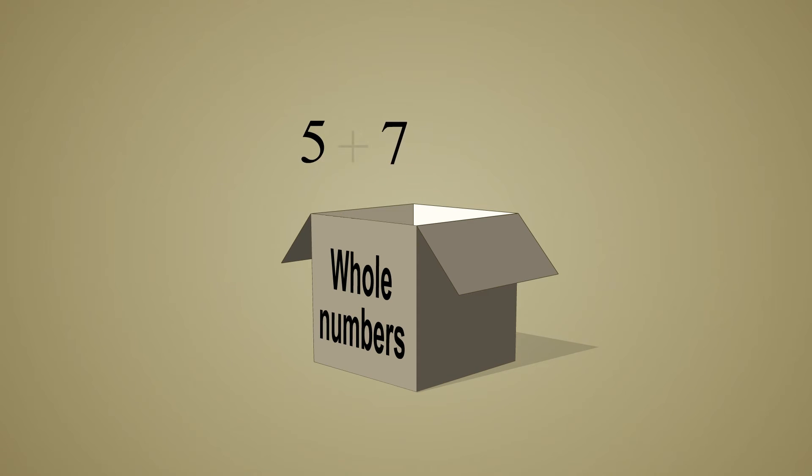When any two whole numbers are added we always get another whole number. Therefore, we say the whole numbers are closed under the operation of addition. A group being closed under some operation means that the operation will always create a result which is also a member of that same group.